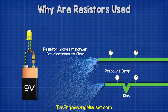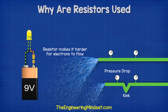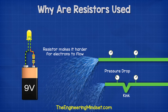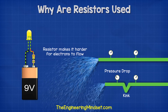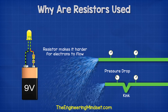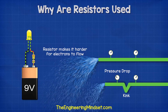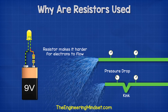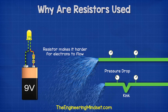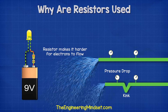It's like having a kink in a pipe. This will add resistance to the flow of water, which reduces how much water can flow through. And as the water is colliding with the pipe wall, it's going to lose energy, so we get a pressure drop.